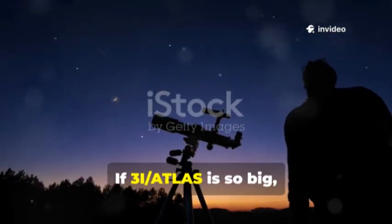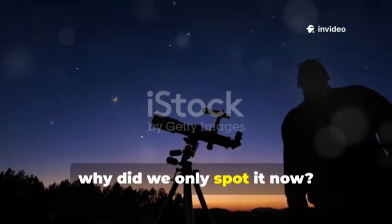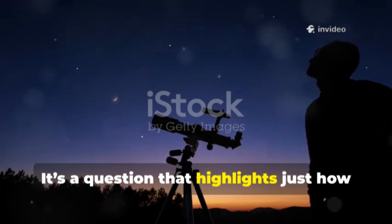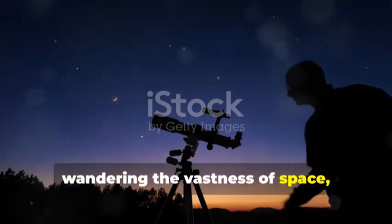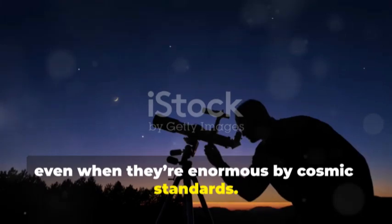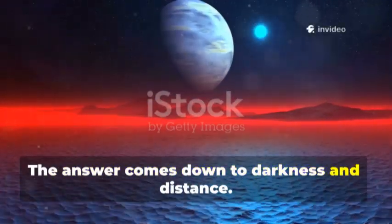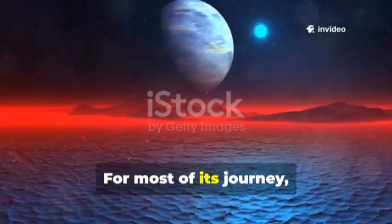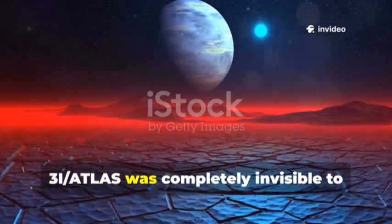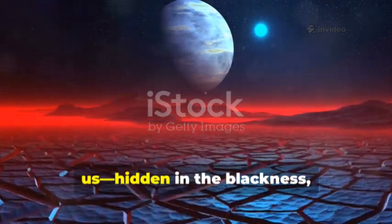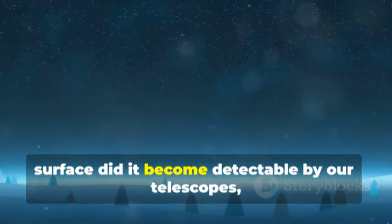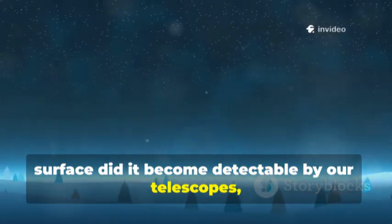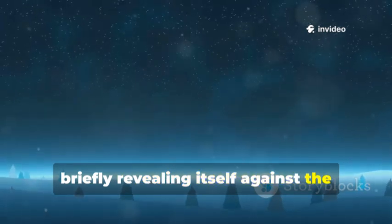If 3i-ATLAS is so big, why did we only spot it now? It's a question that highlights just how challenging it is to find objects wandering the vastness of space, even when they're enormous by cosmic standards. The answer comes down to darkness and distance. For most of its journey, 3i-ATLAS was completely invisible to us, hidden in the blackness far from the sun's illuminating rays. Only when sunlight finally struck its surface did it become detectable by our telescopes, briefly revealing itself against the endless night.